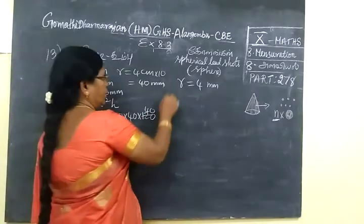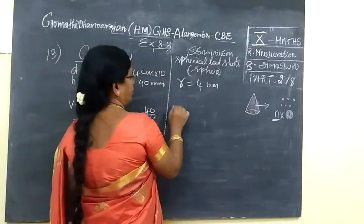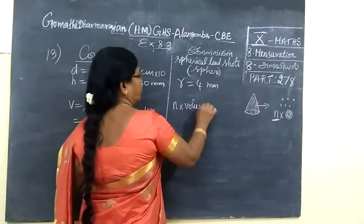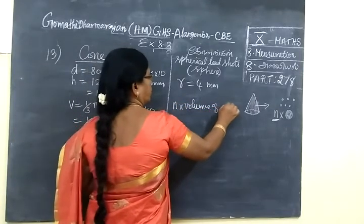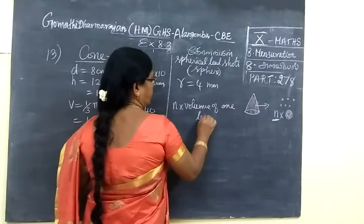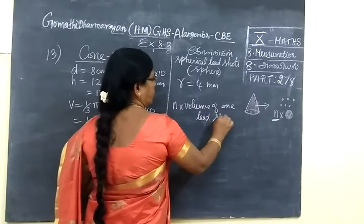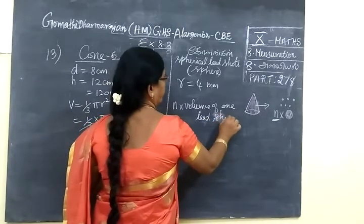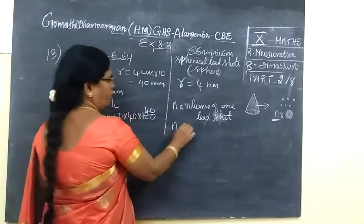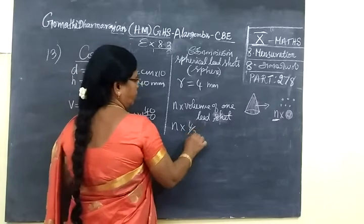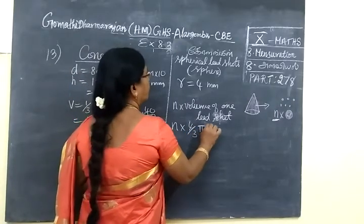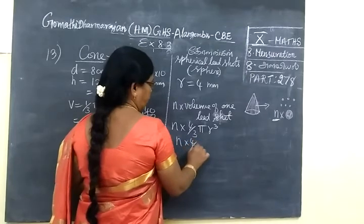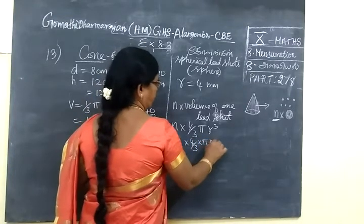Then we are making n number of lead shots. So n times the volume of one lead shot. That means sphere. The lead shot acts as a sphere. So n times 4/3 π r³.